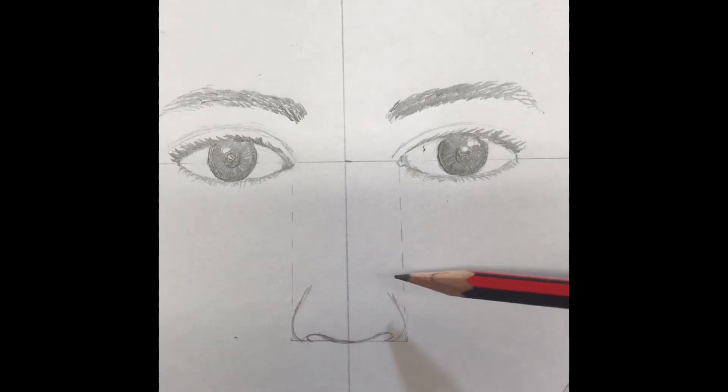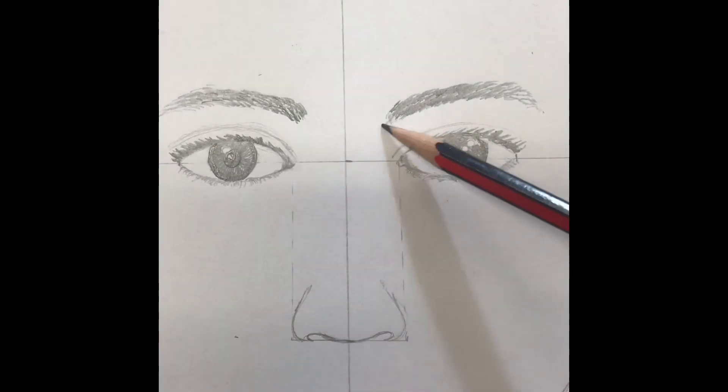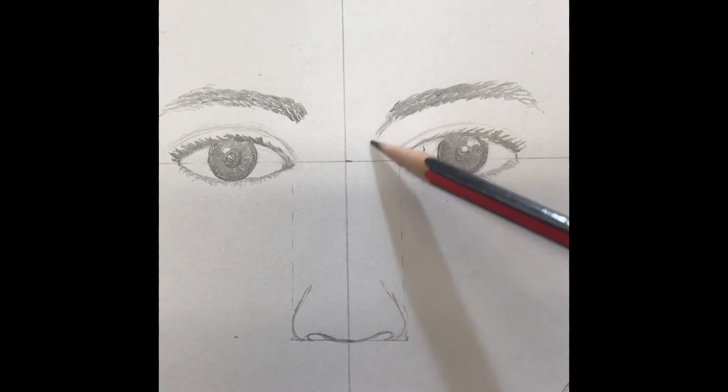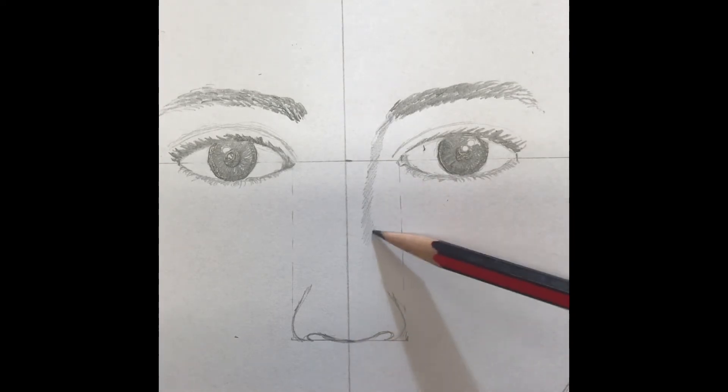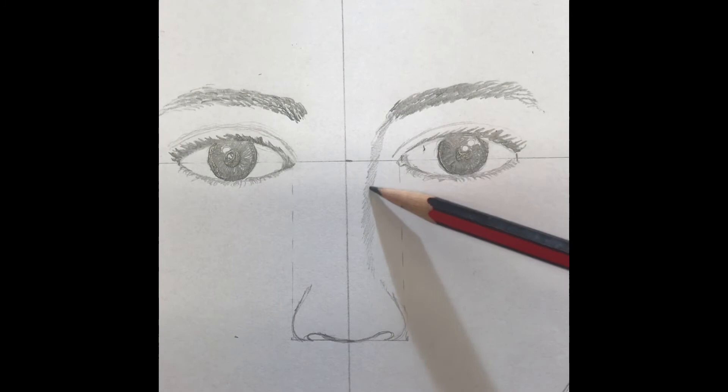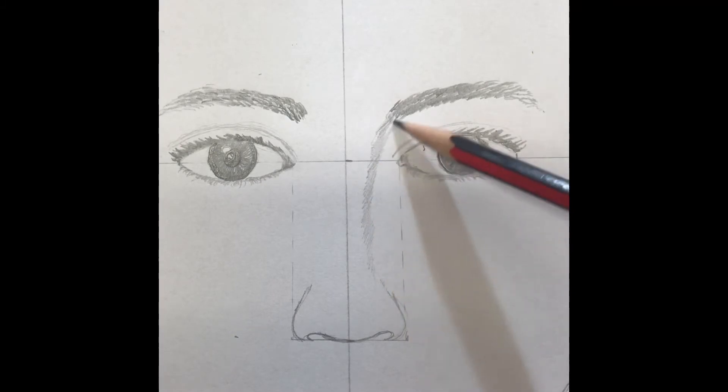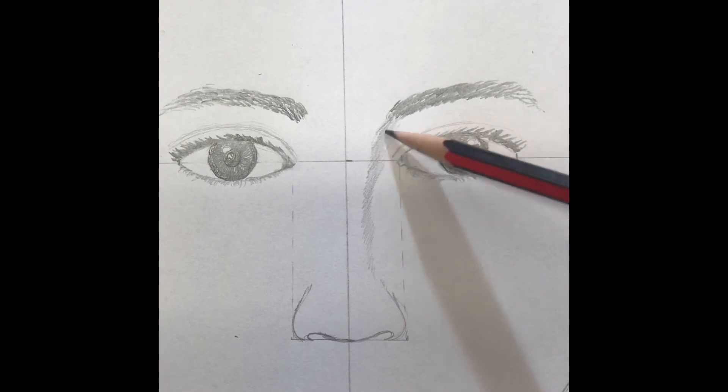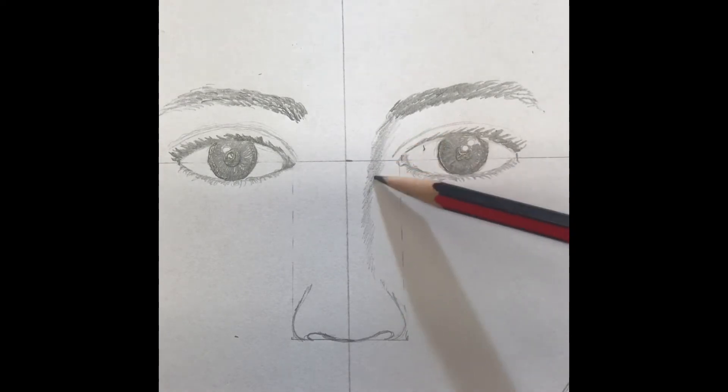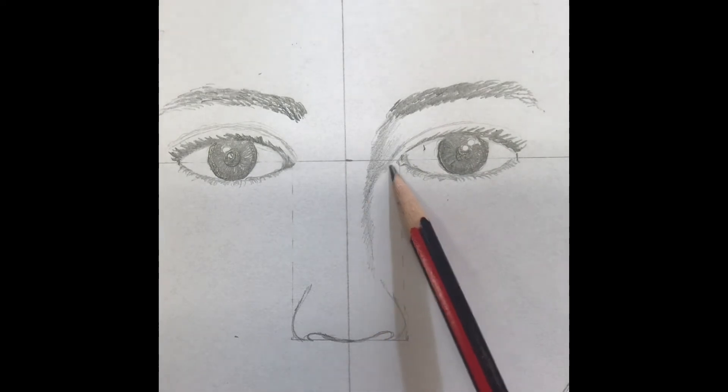Next, you want to take the side of your pencil and create a soft curving shadow from the inside corner of the eyebrow down to meet the edge of the nose. Keep this fairly light and allow it to blend out. Take this shadow from the nose around the eye. This is what will start to make the nose look more three-dimensional.